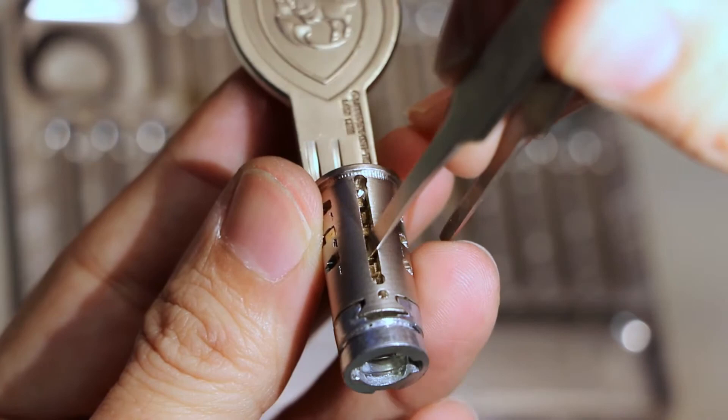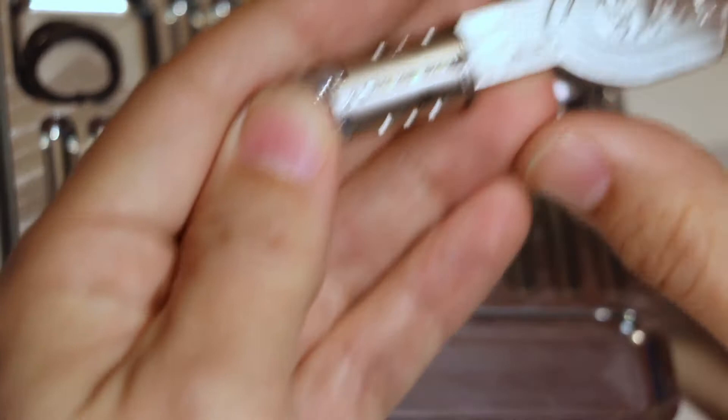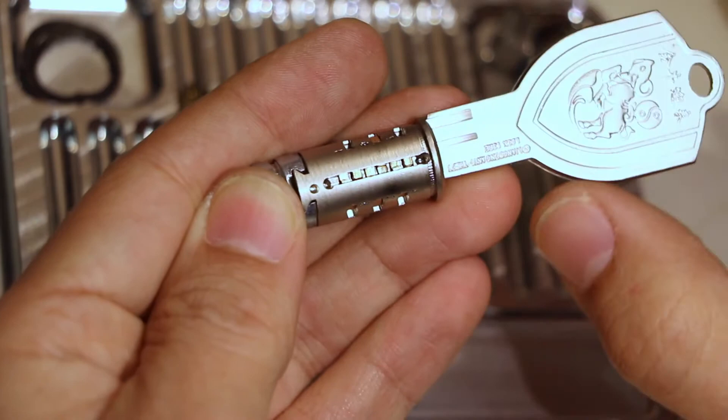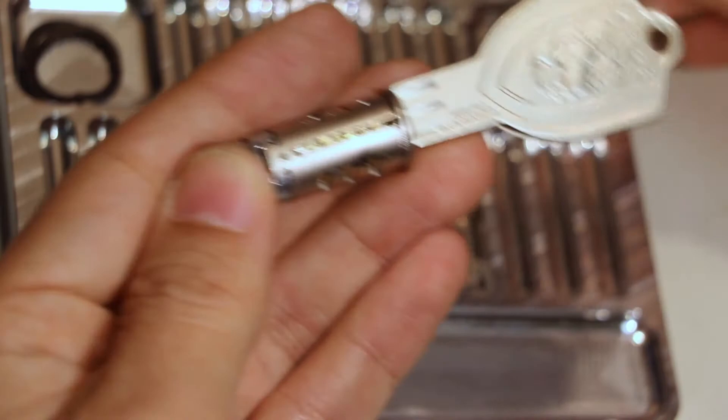So what I'm saying is that the reason that the sidebar has been filed down is because either one, the wrong sliders are in here for this key, or this key hasn't been cut for these sliders. So you could fix this by putting the correct sliders in for this key or cutting this key properly for the sliders that are in here. But instead of fixing either of those problems, they went and just cut the sidebar down so that it worked.